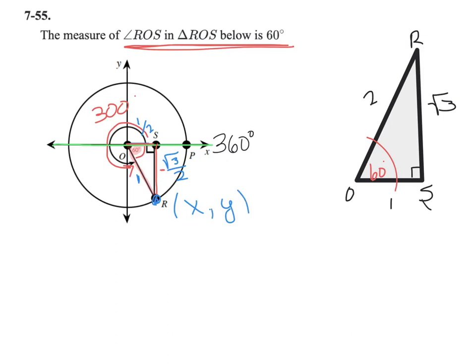I hope you remember from class that x is the cosine and y is the sine. That's going to be our key here. We have angle 60, and we're looking for the cosine. We want an x value and then a y value.